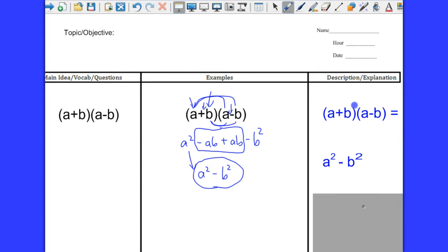That will always be a negative sign because this positive a here times this negative b will always be minus b squared. So here's the rule. This form, a plus b times a minus b, got to have the parentheses in there, by the way, it's a squared minus b squared. This is called a difference of squares.